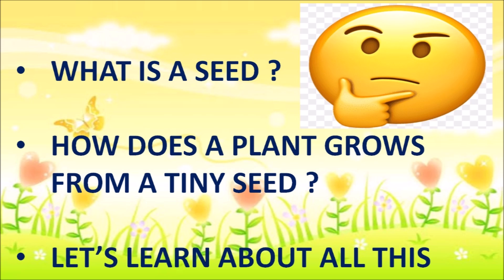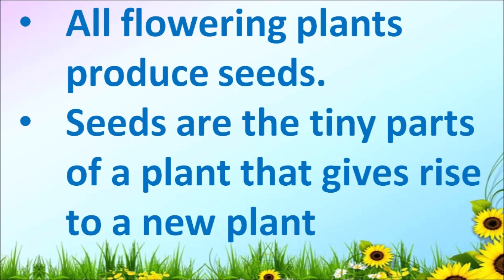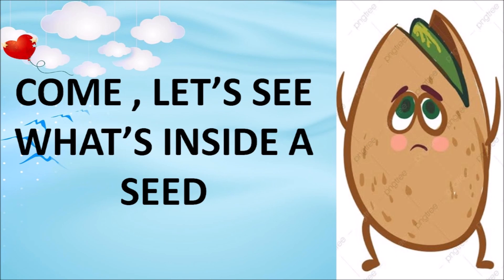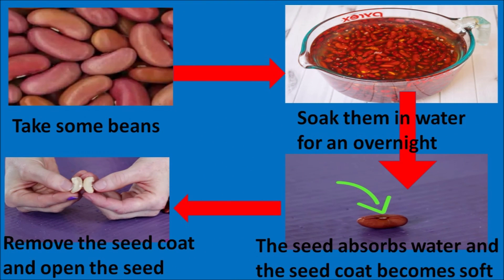Let's learn all about this. You must have seen beautiful flowers around you. It is these flowers that produce the seeds. Hence, all the flowering plants produce seeds. Seeds are the tiny parts of a plant that give rise to a new plant. Come, let's see what's inside the seed. For this, we will take help of some kidney beans — we call them rajma in our local language. When the seeds are dry, they are difficult to open because they have a hard covering on them.